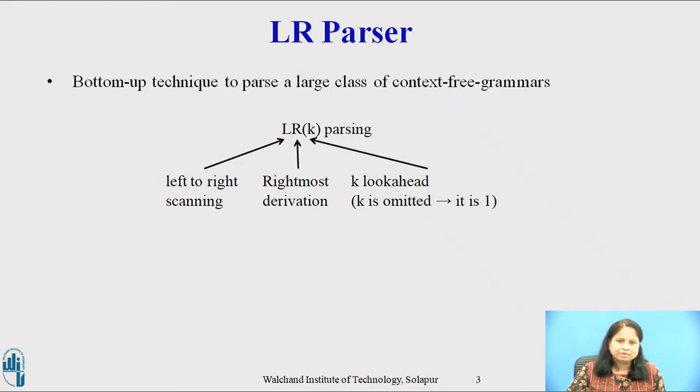LR(K) is a bottom-up technique to parse a large class of context-free grammars. The L is for left-to-right scanning of the input. The R is for constructing the rightmost derivation in reverse and K is for the number of input symbols of lookaheads that are used in making parsing decisions. When K is omitted, K is assumed to be 1.